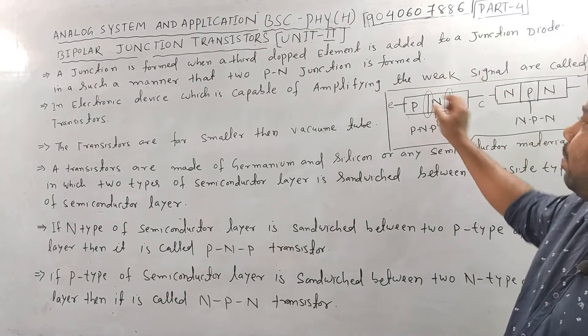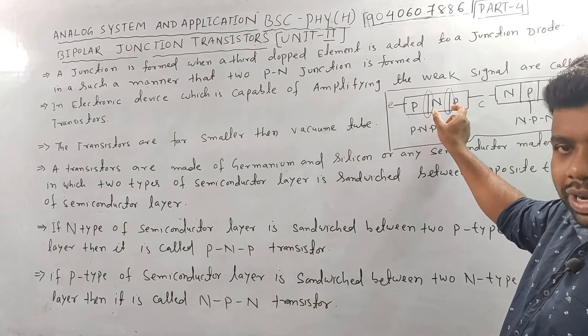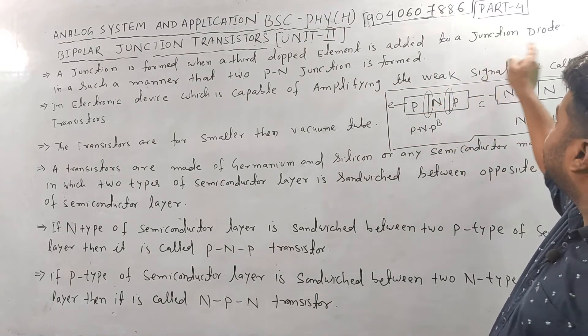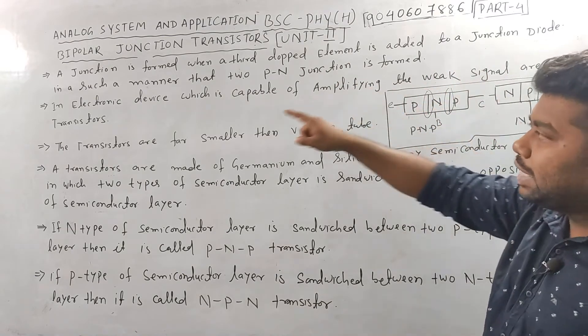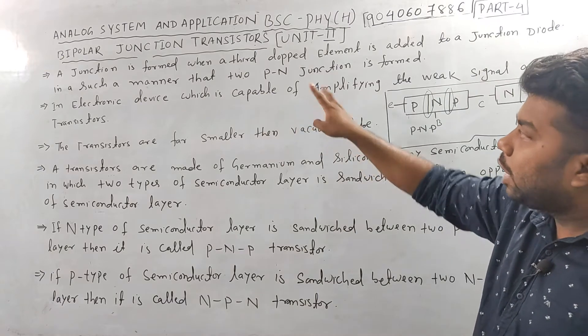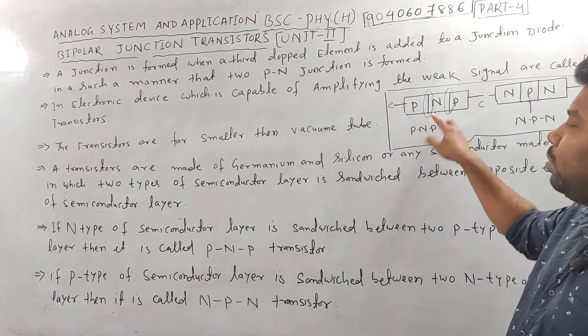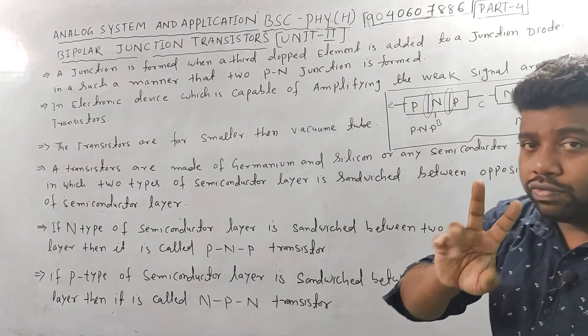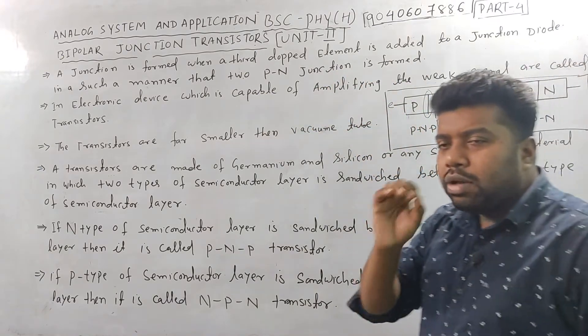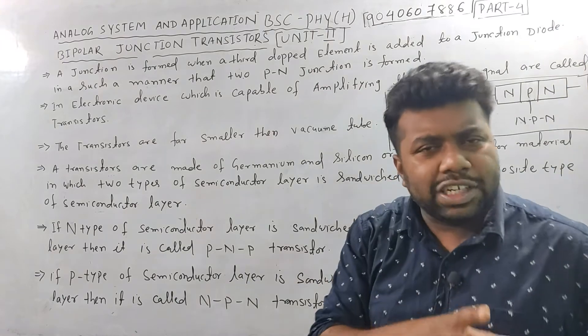The third doped element — in this case N — is added to the junction. In such a manner that two PN junctions are formed. So two PN junctions are created. This is a very interesting topic.